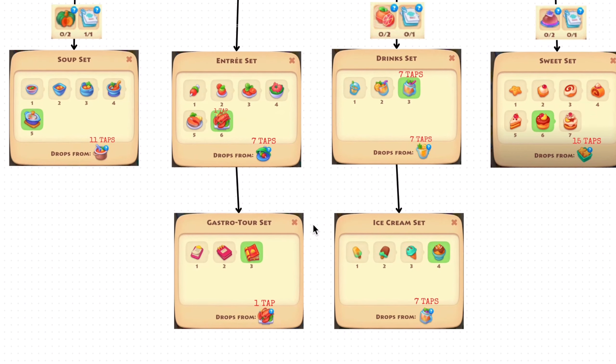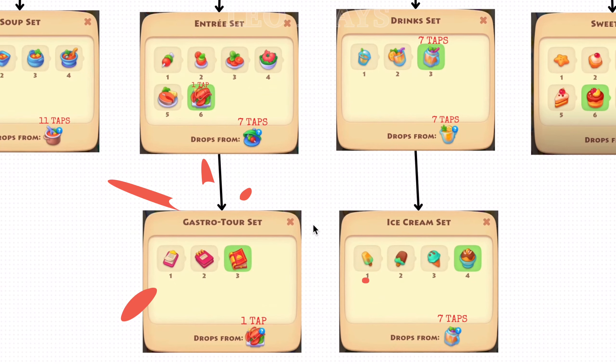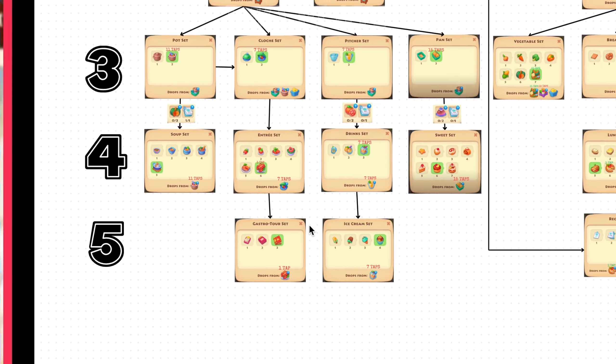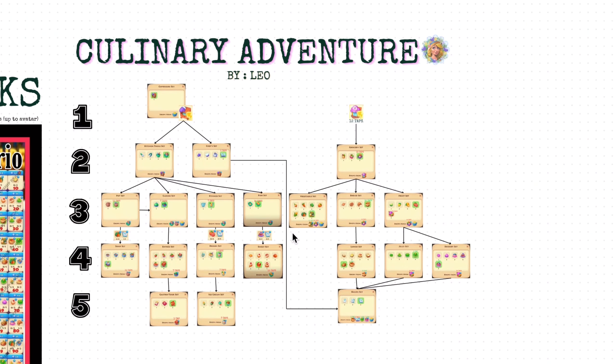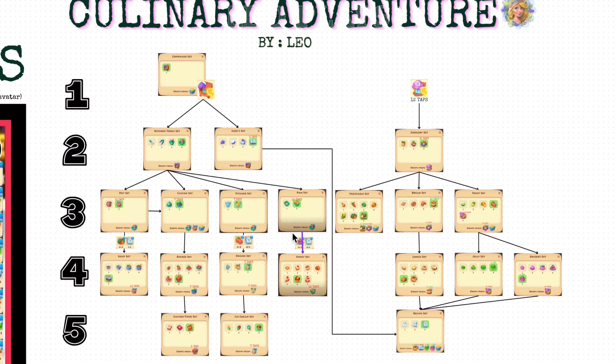Going on, the fourth level: entree makes gastro tour set and drink makes ice cream set. And that is the full list of sets. You can view this map in better quality by clicking on the link in my description box.